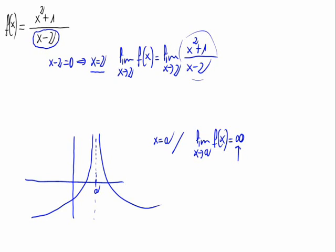To calculate this limit, we just have to substitute: 2 squared plus 1 divided by 2 minus 2, which is 5 divided by 0. This fraction usually doesn't have any sense, but when calculating limits, it means that something divided by 0 is a number extremely, extremely big. That's infinite.